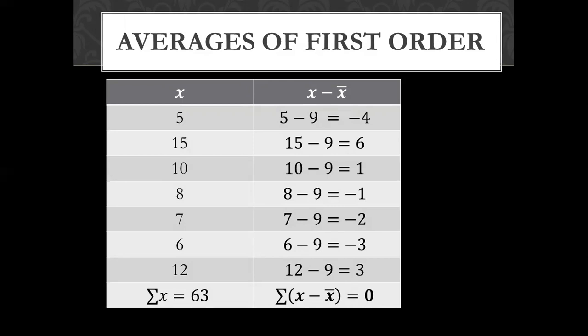So, we had to prove that sum of deviations from the arithmetic mean is 0. So, here we have proven that sum of deviations from the arithmetic mean is equal to 0. So, I hope you will understand everything we have seen in the lecture.